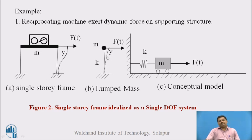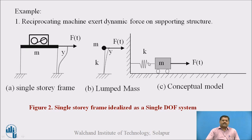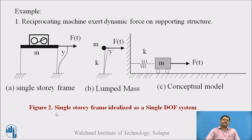This lumped mass system requires a conceptual model to solve the problem. This is the conceptual model, also known as the wagon wheel model. The wagon M represents the mass of the body, subjected to the time-dependent force F(t), and is connected to a fixed base by a spring representing the stiffness of the column. So, the single story frame is converted into the wagon wheel model, which is a single degree of freedom system.